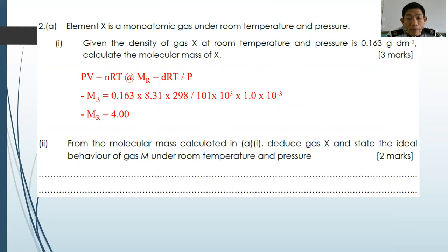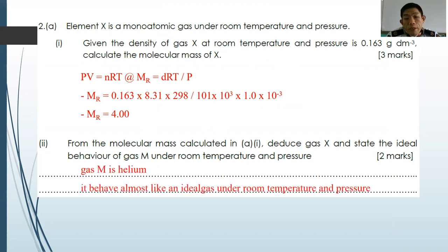From the molecular mass calculated in A1, deduce gas X and state its ideal behavior under room temperature and pressure. If you check the periodic table, gas X is helium. Its behavior under room temperature and pressure is that it can behave almost like an ideal gas.